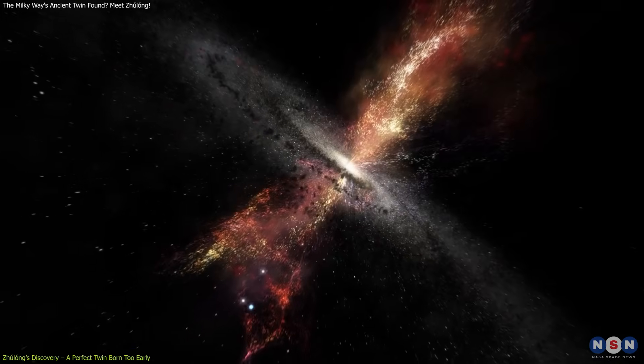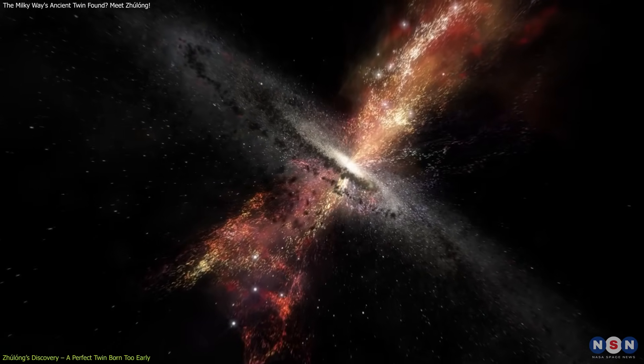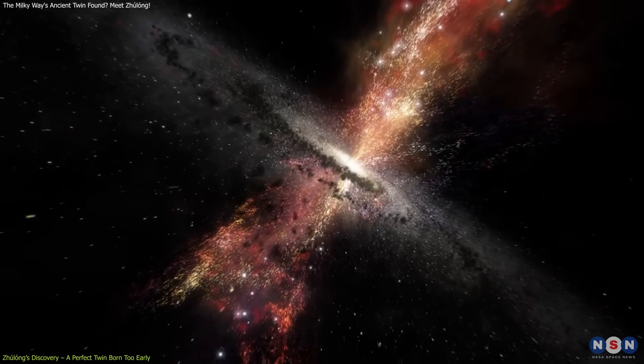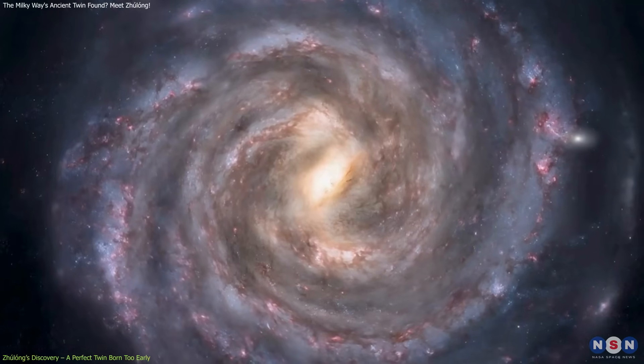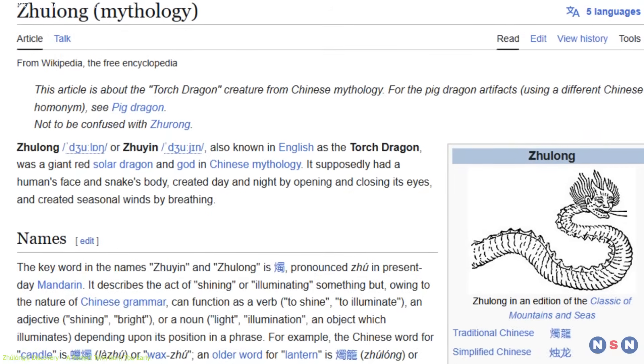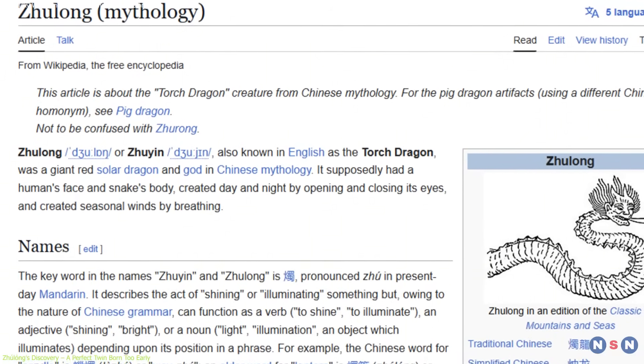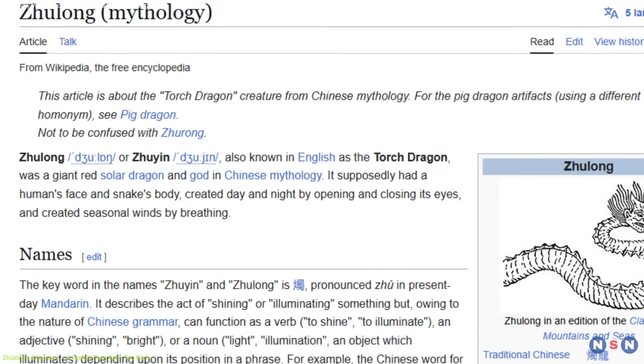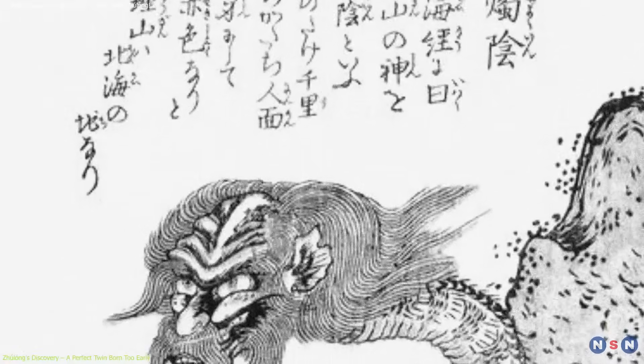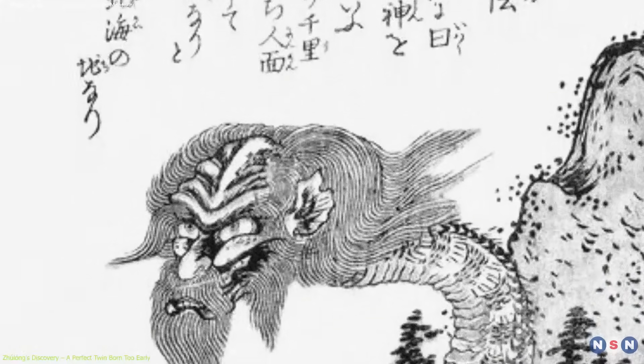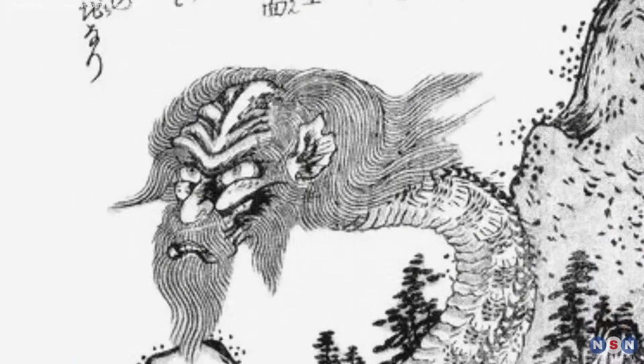In fact, most expectations were that young galaxies would be turbulent messes of star formation without the grand design we see in structures like our Milky Way. The name Zhulong itself derived from Chinese mythology meaning torch dragon, which reflects its significance. In mythology, the torch dragon controlled the cycles of day and night by opening and closing its eye.